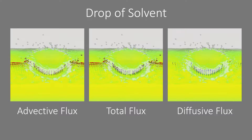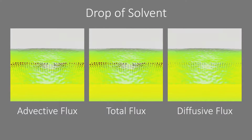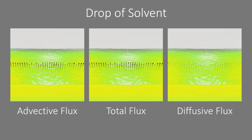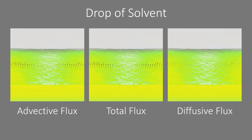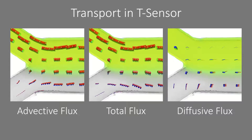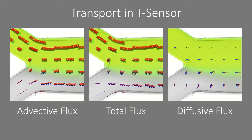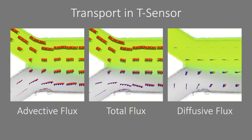Our novel visualization metaphor, the stream feather, is able to simultaneously convey the total flux as well as divergent directions of advection and diffusion. The mixing of fluid streams inside a T-sensor is due to the superposition of advective and diffusive fluxes, which is intuitively captured by our novel visualization.